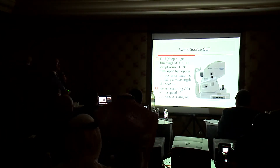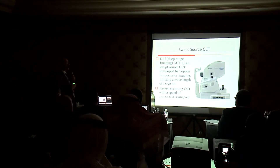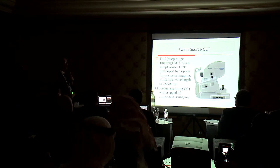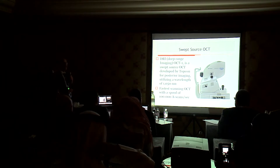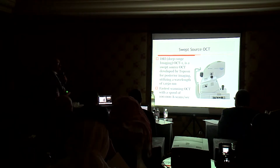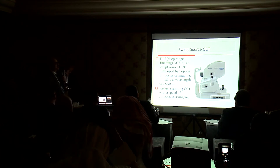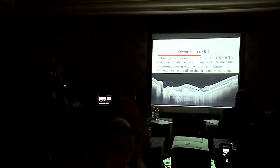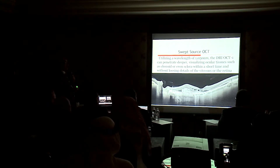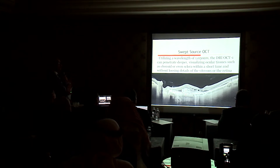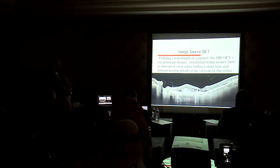Then came the swept source with deeper penetration, longer wavelength, and most importantly the fastest scanning OCT — about 100,000 A-scans per second — so it can sometimes overcome saccadic movement and artifacts in the pictures. This is a picture of swept source OCT where we can see the vitreous clearly, the vitreous separation at the disc, and the retinal layers very clearly. We can see the lesion without shadowing below the region, so we can clearly see the choroid up to the sclera.